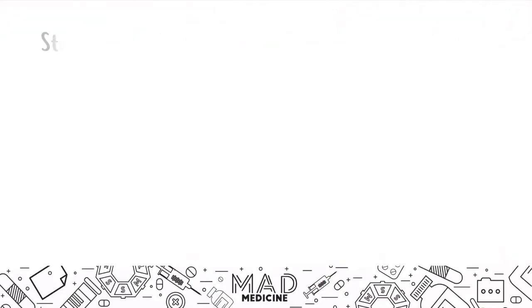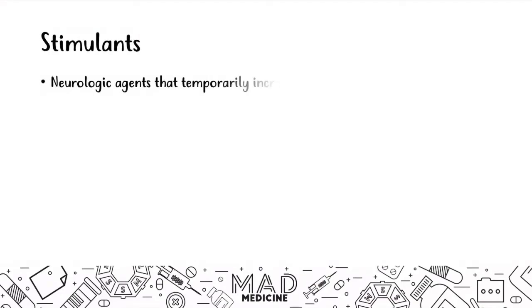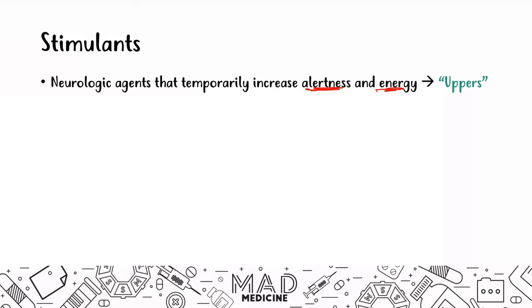Let's start talking about stimulants. Stimulants are neurologic agents that temporarily increase alertness and energy. Hence, on the street, they're often called uppers. Downers are depressants; uppers are stimulants. The intoxicating effects of these stimulants are very nonspecific — you're not going to be able to figure out if someone's been taking a stimulant or a downer simply based off of their effect. You need some surrounding information and physical findings as well.